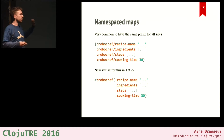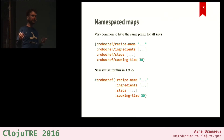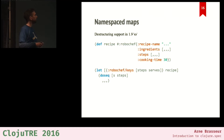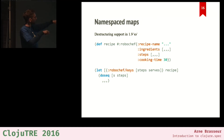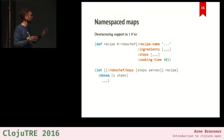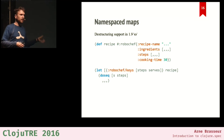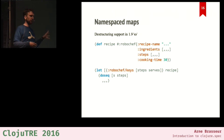If you consume that data you'll want to destructure it. Destructuring with namespace keywords wasn't easy before, but we also get a new syntax for this. Where you normally would put :keys for destructuring, you now give :keys a prefix, and then it'll pull out the values with that prefix. So here I'm pulling out 'steps' and 'serves', and this has already shipped a couple of alphas ago.